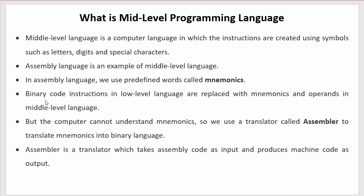The fourth point is that binary code instructions in low level language are replaced with mnemonics and operands in middle level language. In low level language, instructions are written only in the form of zeros and ones — those are binary instructions. In middle level language, those binary instructions get replaced with mnemonics and operands.